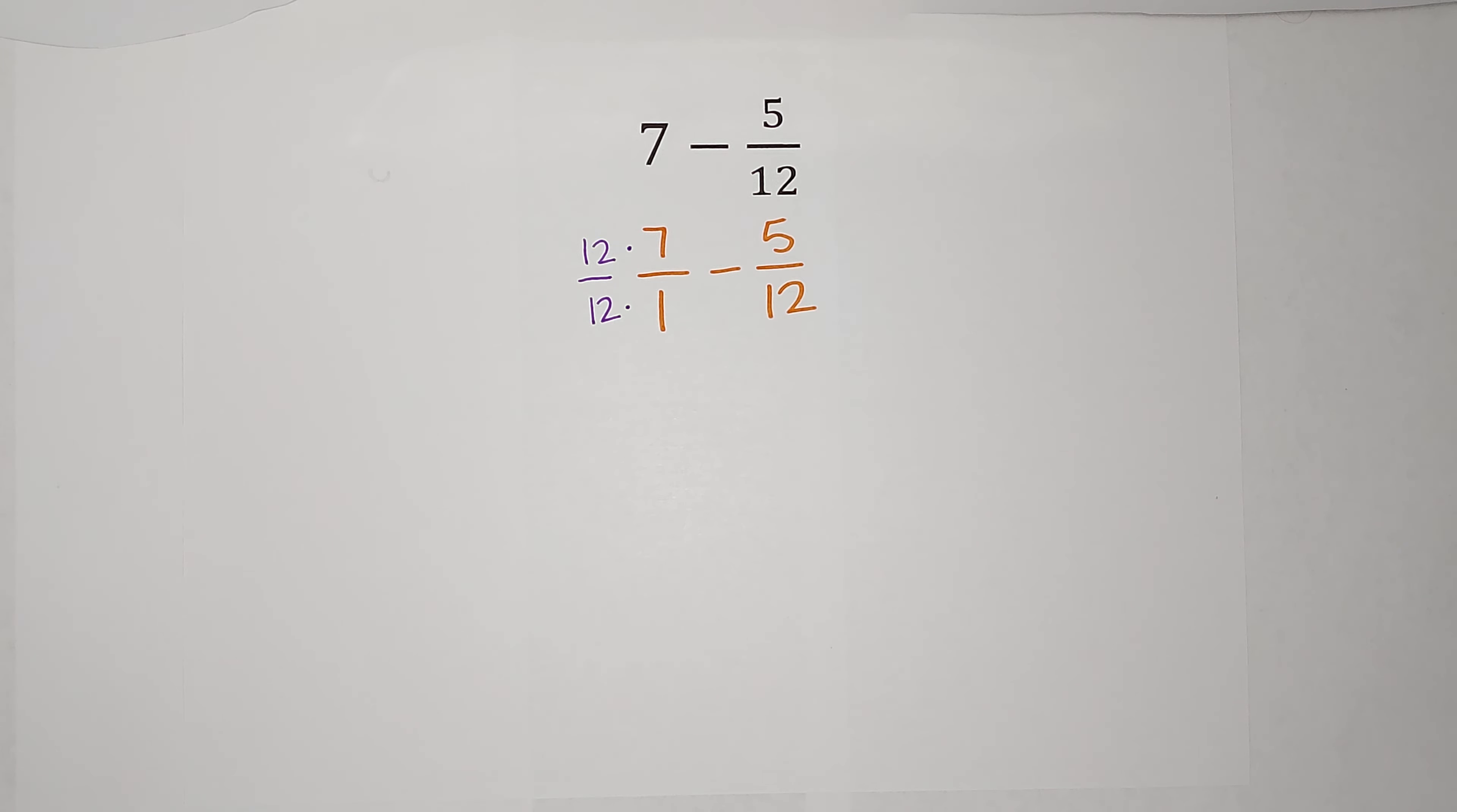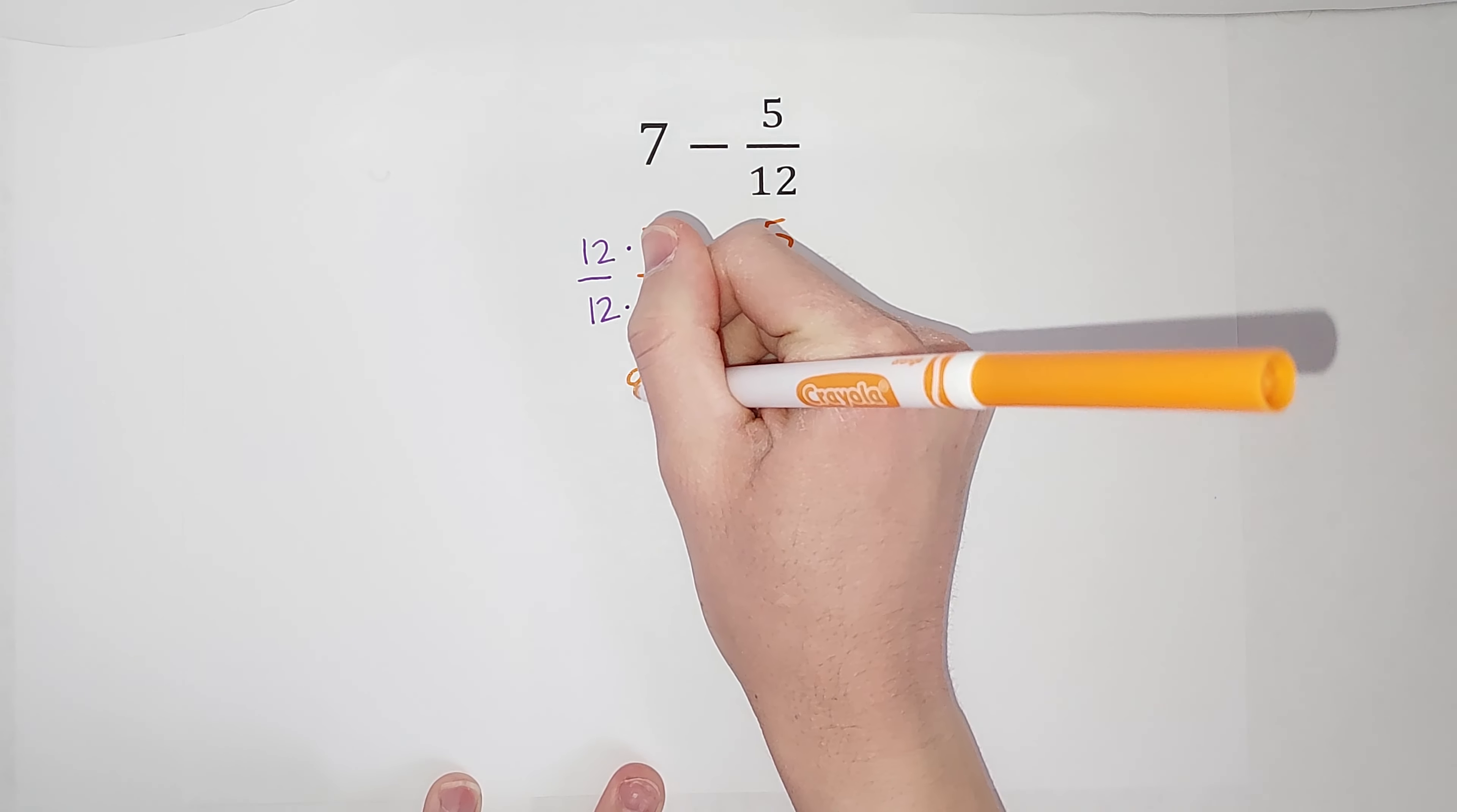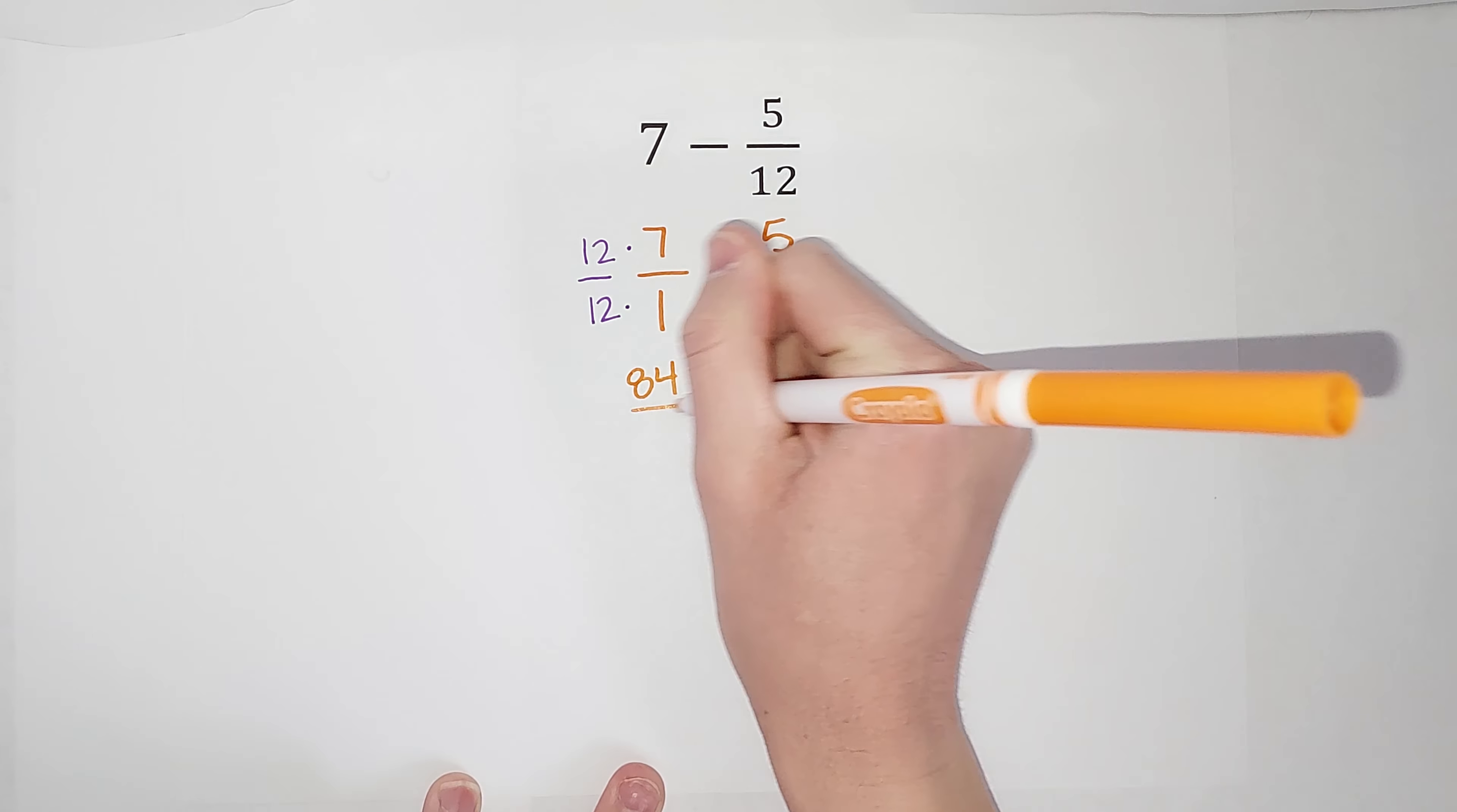So when I multiply 7 over 1 by 12 over 12, I get 12 times 7 gives me 84. And 12 times 1 gives me 12, which is what we wanted, right? Sweet.